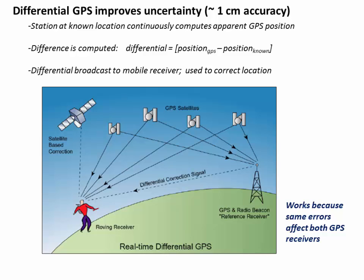The base station can broadcast that differential number out to a handheld receiver. Your receiver can then apply that correction — essentially saying the fixed station is off by one meter today, so I'm also off by one meter, and apply that correction to improve accuracy. This system works because the same uncertainties — ionospheric and atmospheric delays — are affecting both the roving GPS and the base station. That's how differential GPS works.